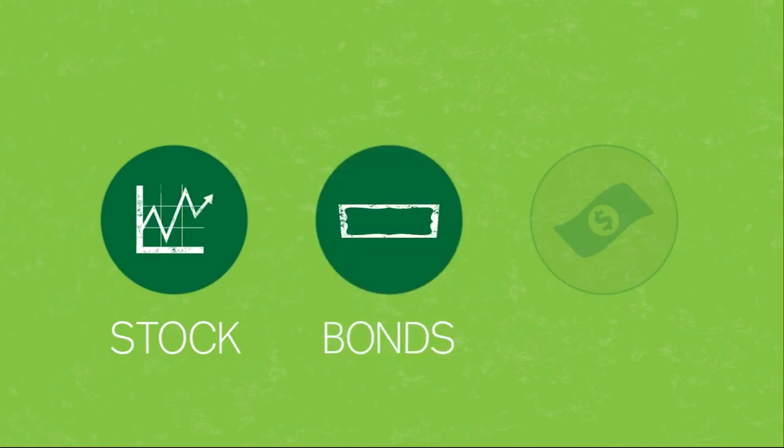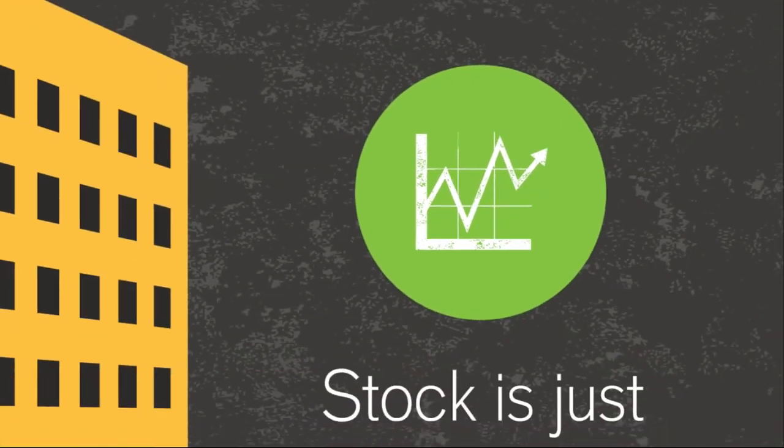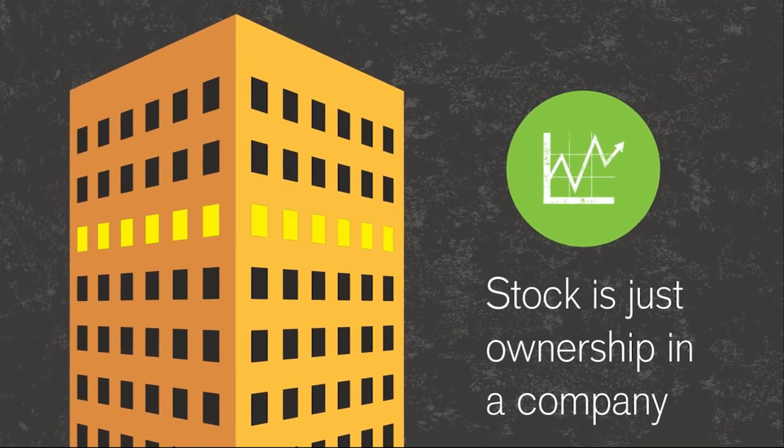Stock, bonds, and cash. Stock is just ownership in a company. There are many ways to classify stock.